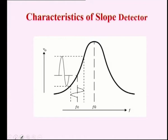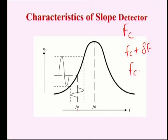This is the characteristics curve of the slope detector. On the x-axis we have frequency and on the y-axis we have the output voltage. Here at this point we have the carrier frequency Fc, which is the frequency at which the FM signal is transmitted. In case of modulation: Fc, Fc plus ΔF, and Fc minus ΔF. When the message signal is 0, the signal is transmitted at carrier frequency. During the positive peak the carrier shifts to Fc plus ΔF, and during the negative peak it shifts to Fc minus ΔF.